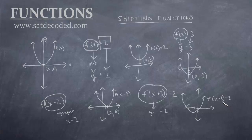That's really the basics of shifting. You just have to notice if the plus or minus value is outside the function — that moves it up or down. Positive values move it up on the y-axis, negative values move it down. Stuff inside the parentheses affects the x-value, so that moves it left and right on the x-axis, except it's counterintuitive. So let's try another question, a little bit harder.